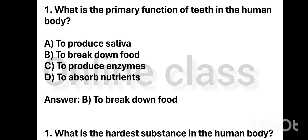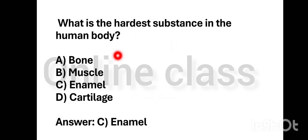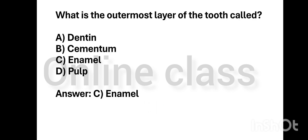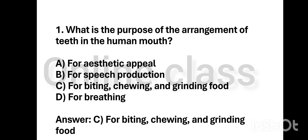What is the primary function of teeth in the human body? The function of teeth is to break down food. What is the hardest substance in the human body? The hardest substance is tooth enamel. What is the purpose of the arrangement of teeth? It is for biting, chewing, and grinding food.